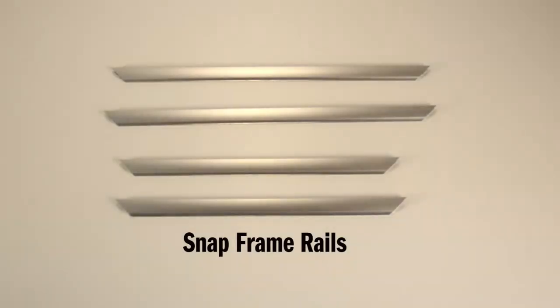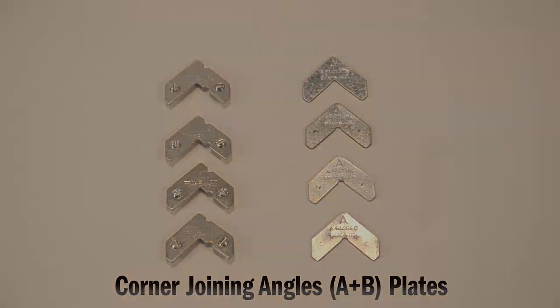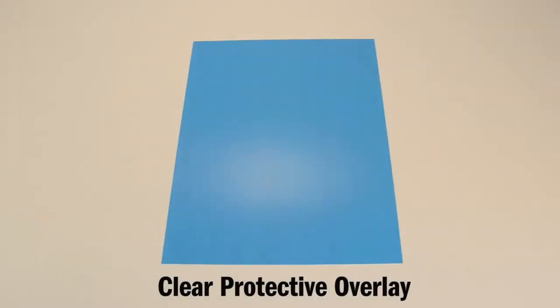There should be four rails, four corner joining angles consisting of eight pieces, a backing board, and a clear plastic overlay.